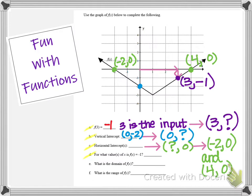Now let's look at part d: for what value or values of x is f of x equal to negative 1? There could be more than one right answer. This tells me the output value is negative 1, so I'm looking for an ordered pair — or maybe more than one — where the y value is negative 1, but I have to figure out what the x value is. I'm going to go to negative 1 on my y axis and imagine drawing a horizontal line across through the graph.